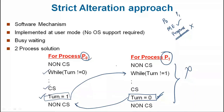We discussed the progress property. P0 process has executed the critical section and then turned it over to P1. But P1 is not executing the critical section. If P1 is not executing and P0 has stopped, that means progress property is not satisfied.